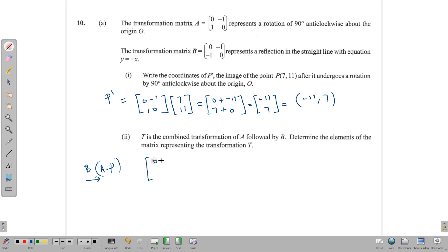Let's find BA then. BA equals 0 negative 1, negative 1 0, and we're multiplying it by A which is 0 negative 1, 1 0. Let's do our multiplication row by column. 0 times 0 is 0, plus negative 1 times 1 is negative 1. Then 0 times negative 1 is 0, plus negative 1 times 0 is 0. Row by column again: negative 1 times 0 is 0, plus 0 times 1 is 0. And negative 1 times negative 1 is positive 1, and 0 times 0 is 0. So the elements of matrix T are negative 1, 0, 0, 1.